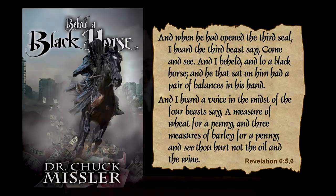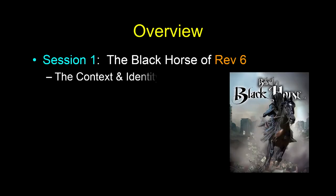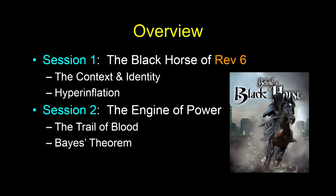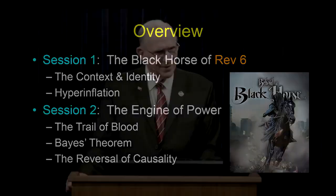We're going to first put this in context. Before we jump into the details, let's not forget where this shows up in the apocalypse. We're going to talk about the context and the black horse's identity. Then we're going to focus on the topic of hyperinflation. That'll set the stage for our second session, in which we'll talk about the engine of power, the trail of blood, and a strange tool called Bayes' Theorem.